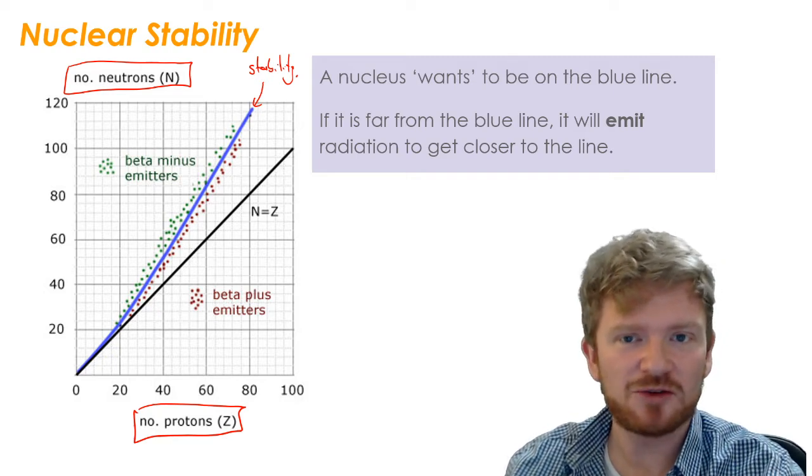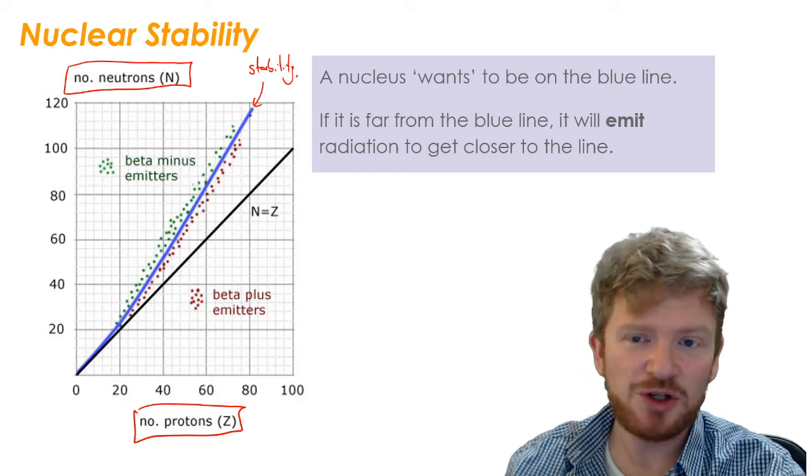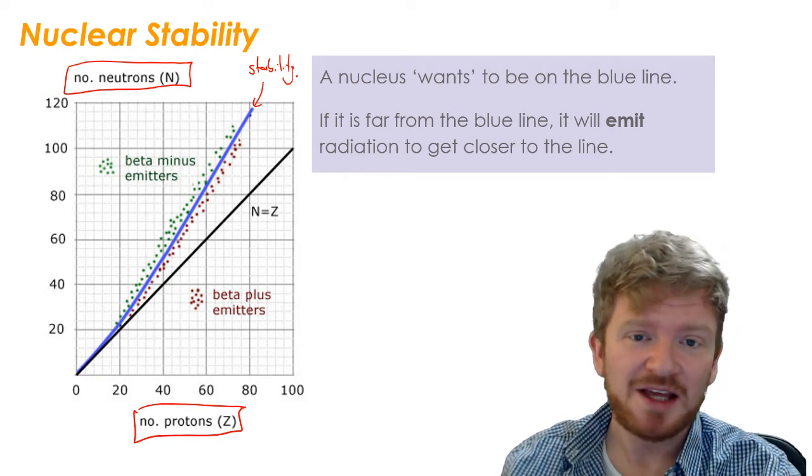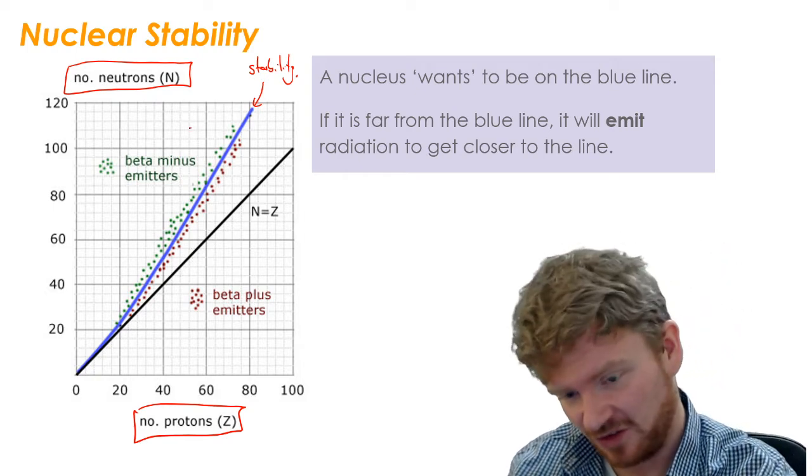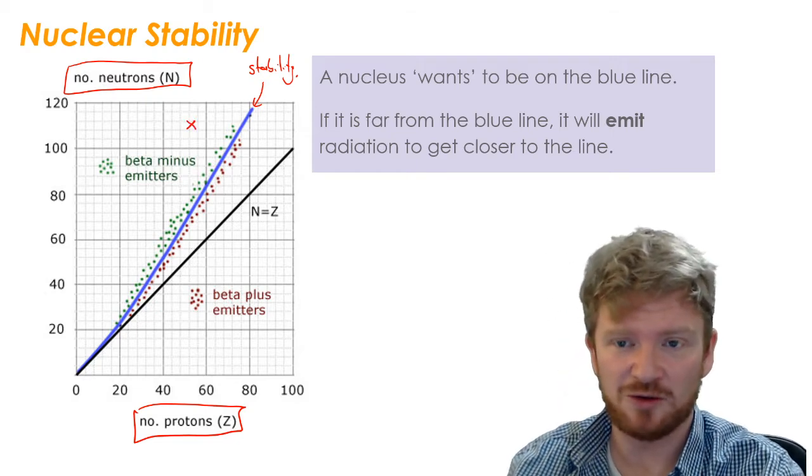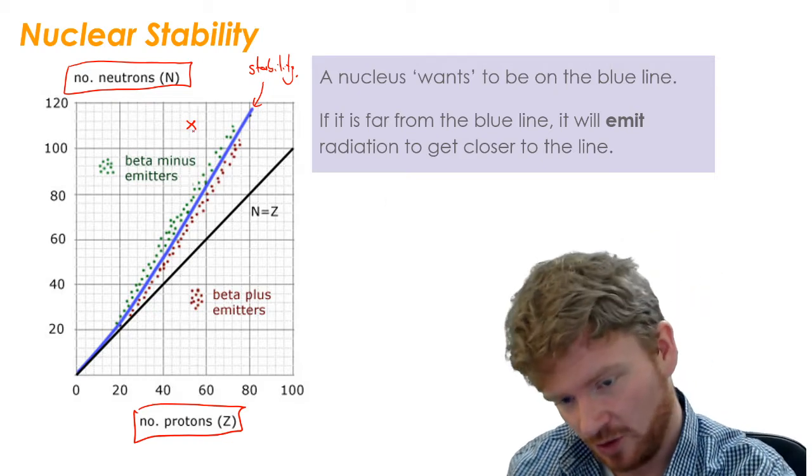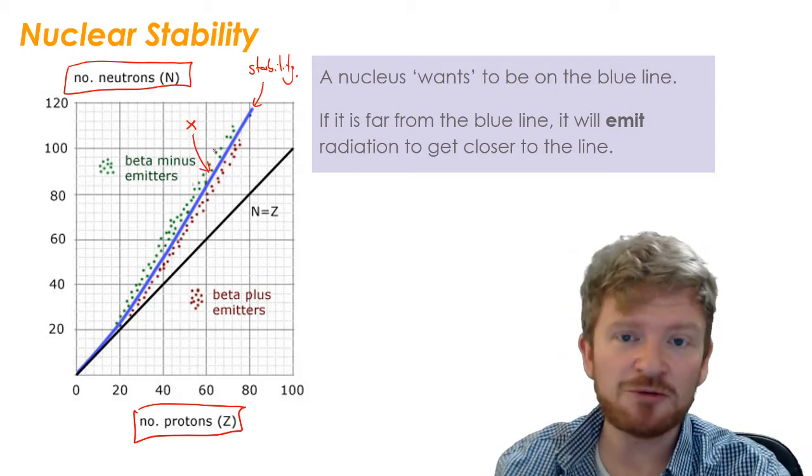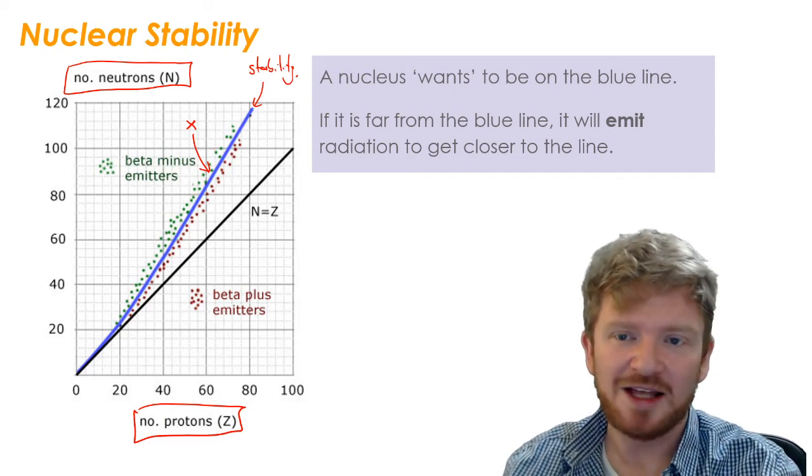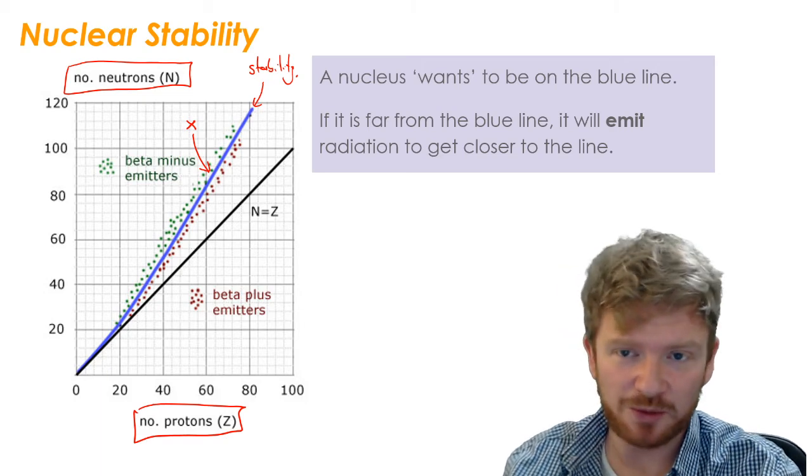And there are reasons for that, which I did discuss a little bit in the lesson, but I'm not going to do in this video because it will just make it a bit too long. What you need to, well again you don't really need to know it, but what's useful to understand, is that if I have an element that exists over here, or an isotope that exists over here, it's going to want to get to that blue line. And radiation, and emitting radiation, that's the way that elements get from being far away from the blue line towards the blue line.